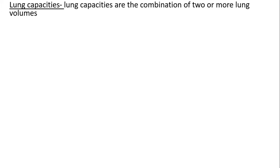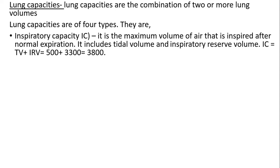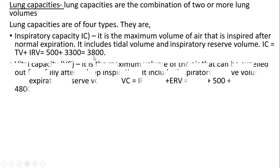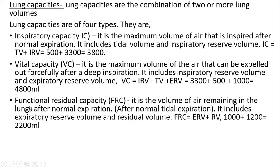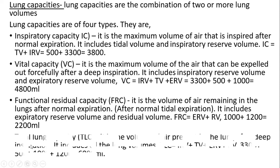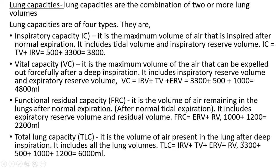Lung capacities are combinations of two or more lung volumes. Inspiratory capacity is the maximum volume of air that can be inspired after normal respiration; it includes tidal volume and inspiratory reserve volume, coming to around 3,800 ml. Vital capacity is the maximum volume of air that can be expelled forcefully after a deep inspiration; it includes inspiratory reserve volume, expiratory reserve volume, and tidal volume — around 4,800 ml. Functional residual capacity is the volume of air remaining in the lungs after normal tidal expiration; it includes expiratory reserve volume and residual volume — around 1,200 ml. Total lung capacity is the volume of air present in the lungs after a deep inspiration, including all lung volumes — around 6,000 ml.